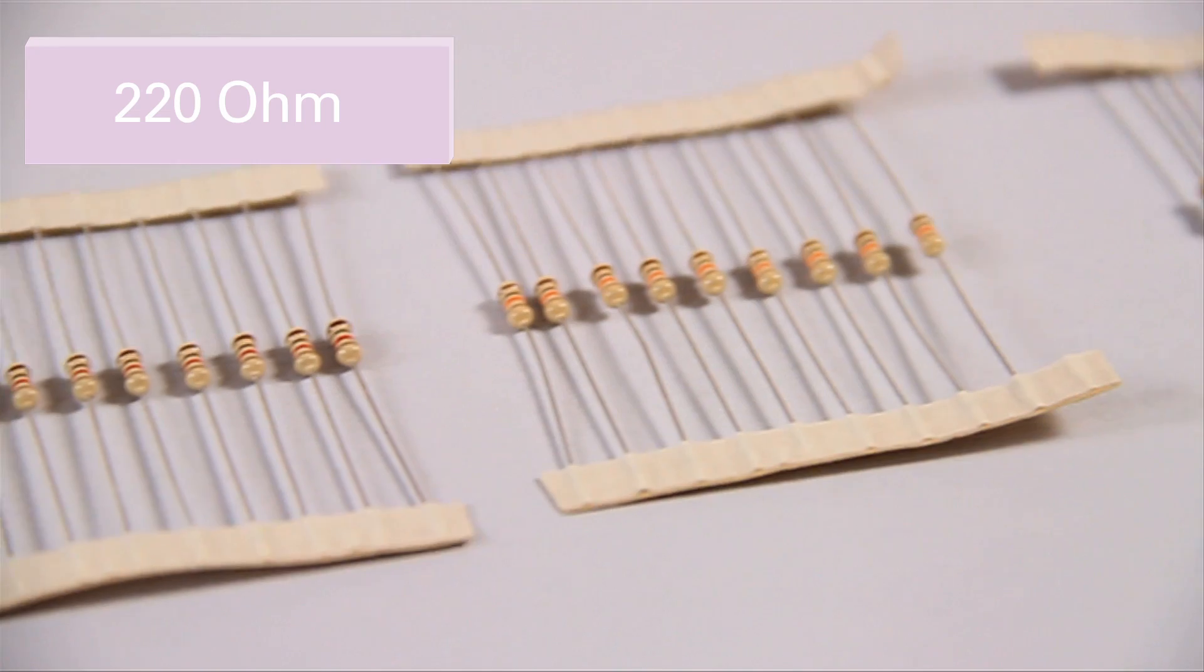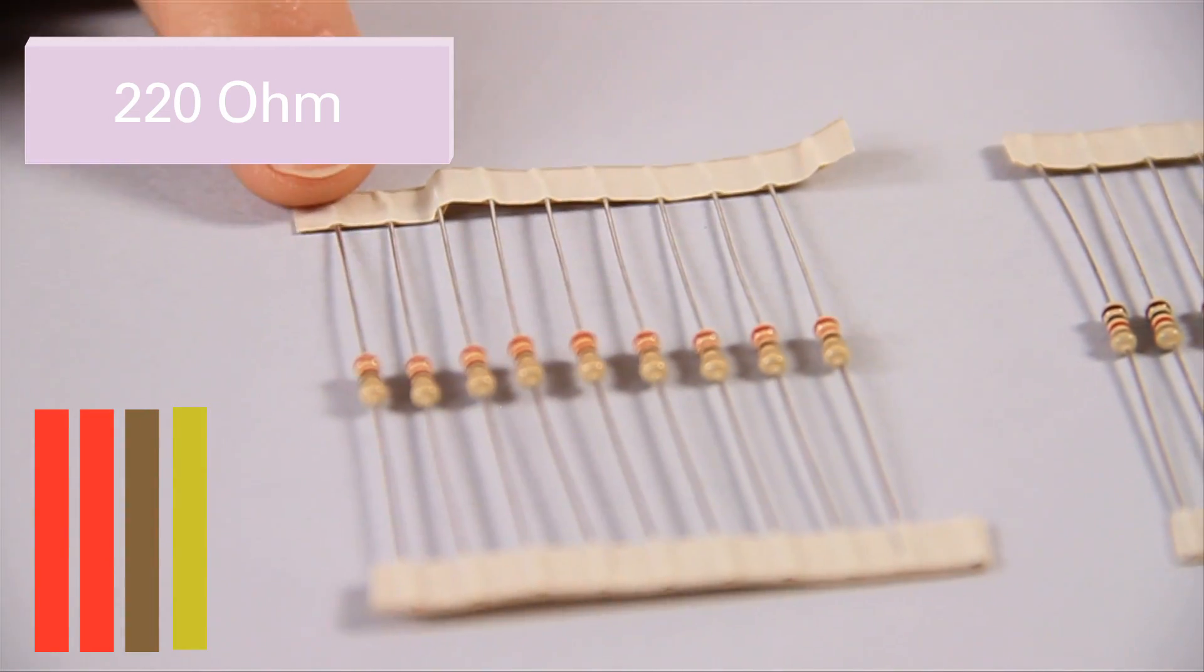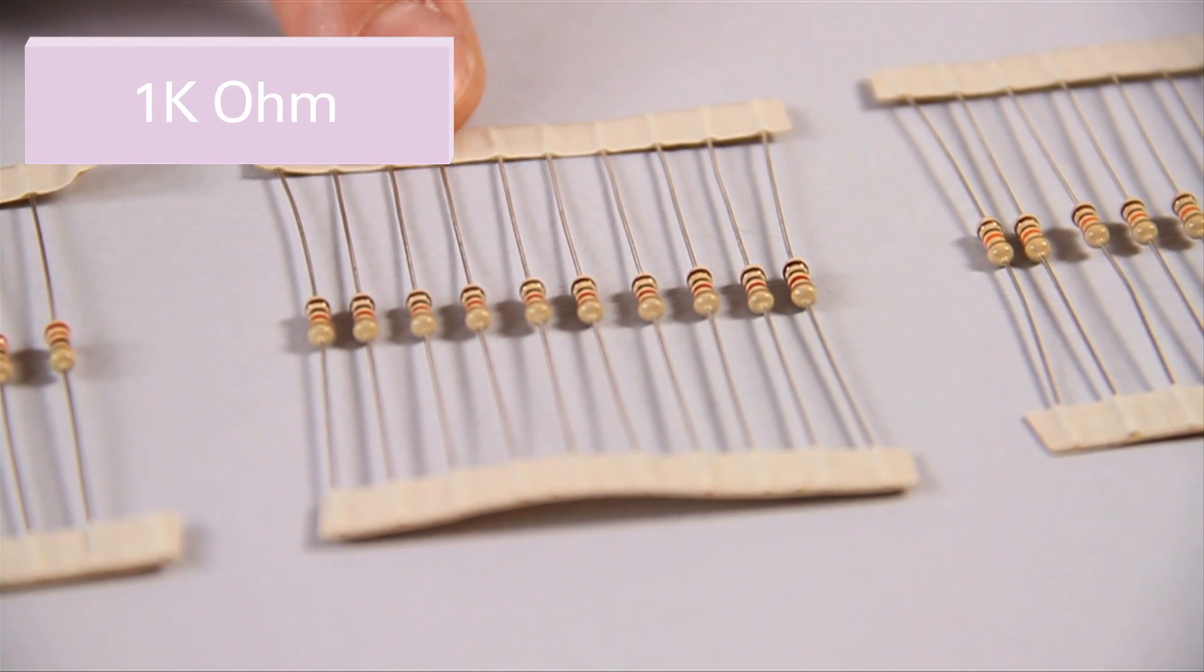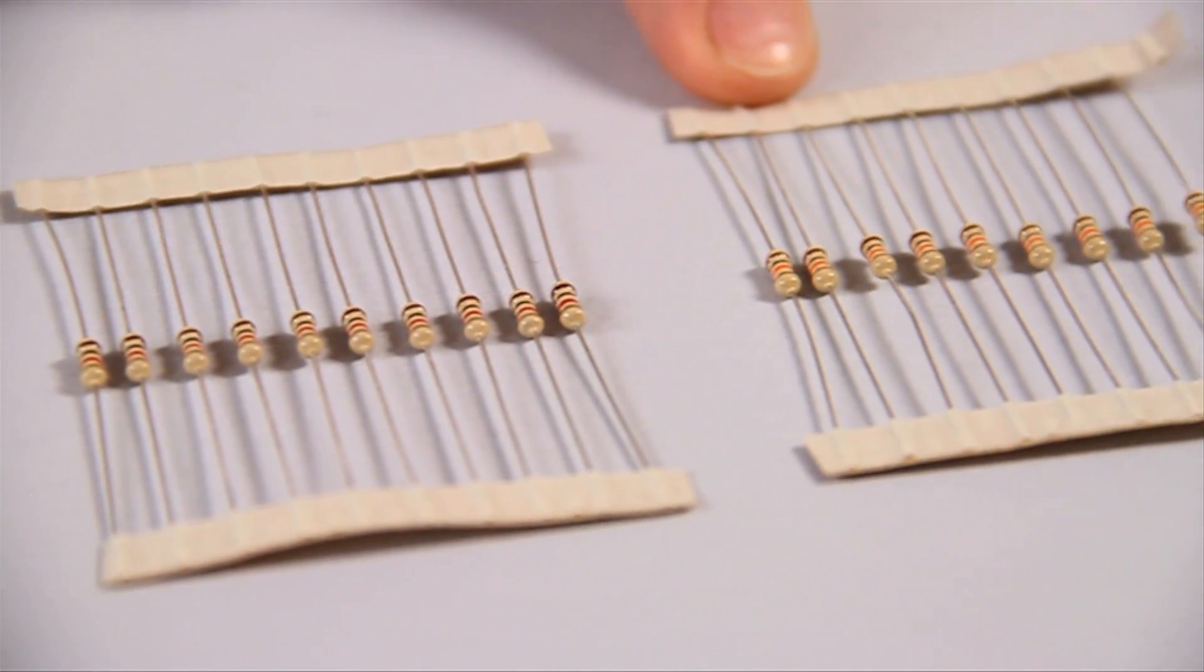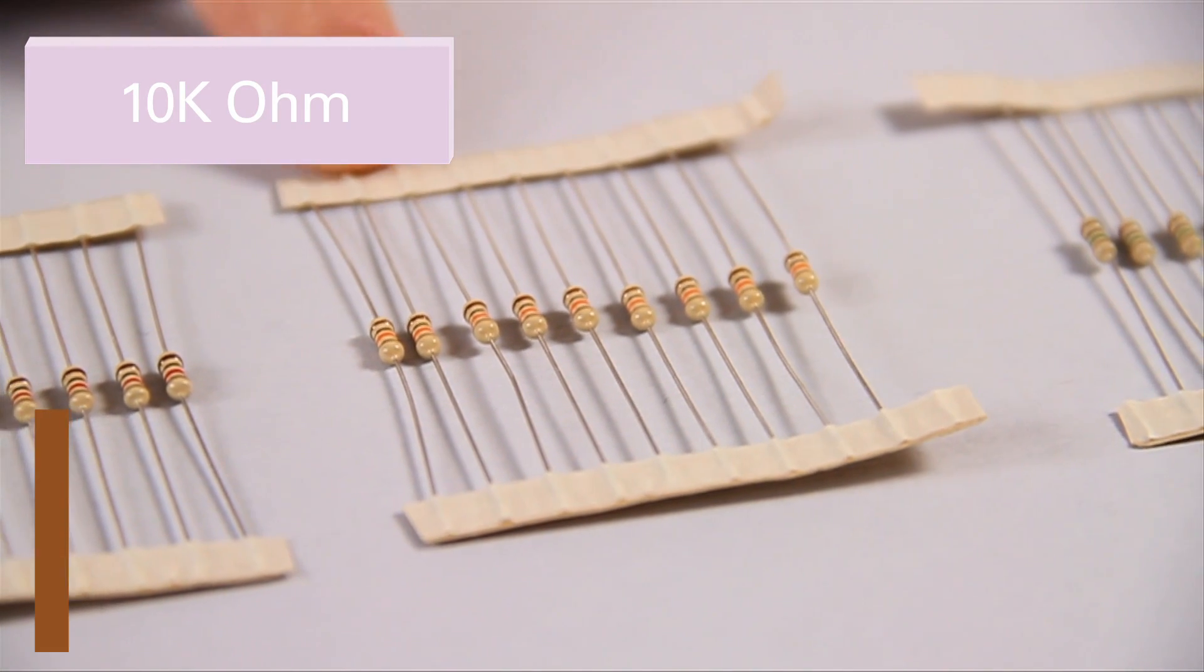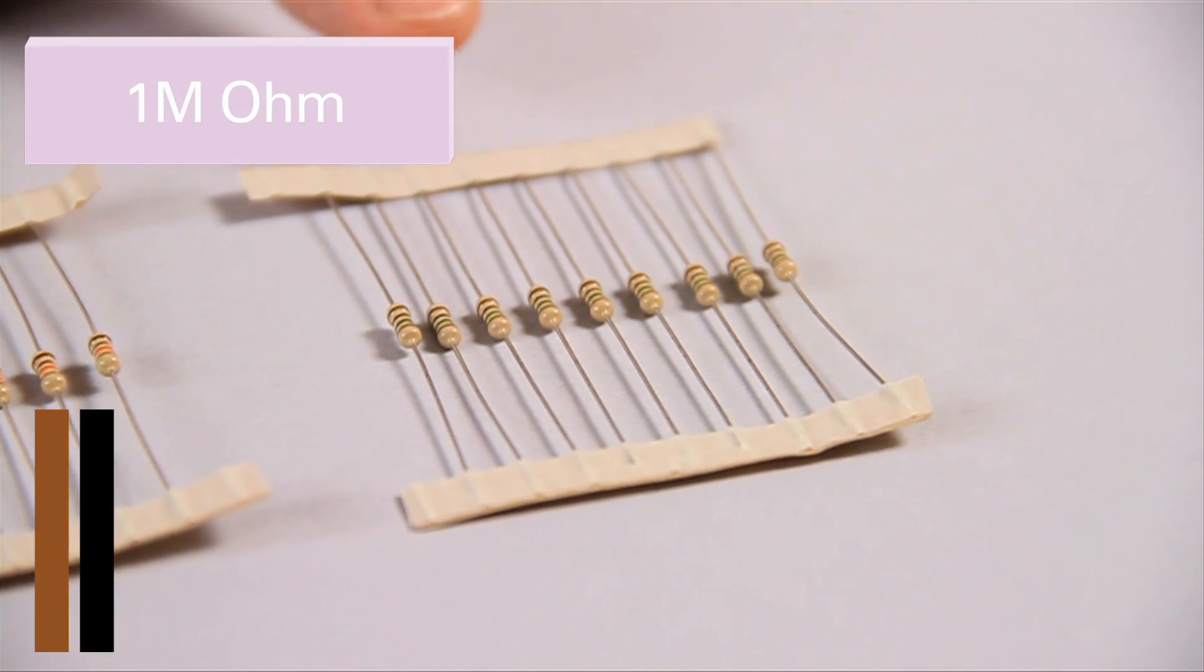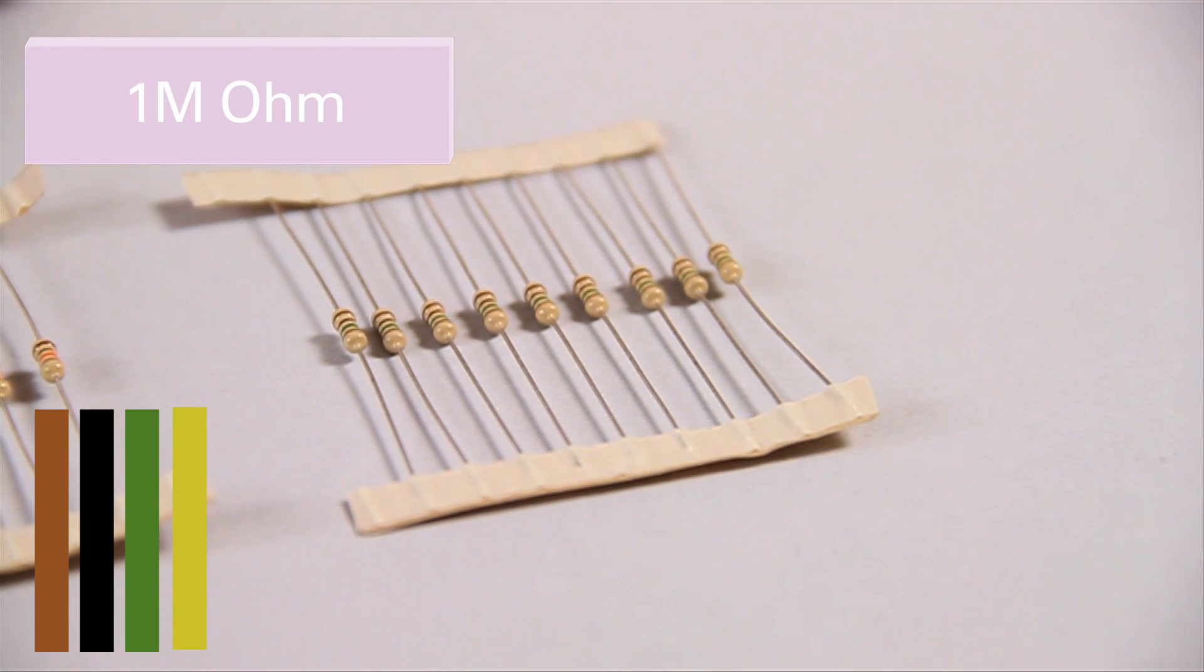So you have 10, 220 ohm resistors. The band colors are red, red, brown, gold. And these are great for using with your LEDs. There are 10, 1 kilo ohm resistors. And the band color for these are brown, black, red, gold. Then you have 10, 10 kilo ohm resistors. And the band color for these are brown, black, orange, gold. And then you have 10, 1 mega ohm resistors. And the band colors for these are brown, black, green and gold. And these, use these if you want to play with capacitive touch.